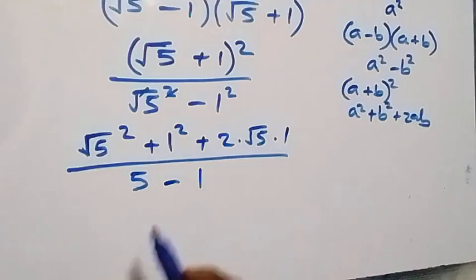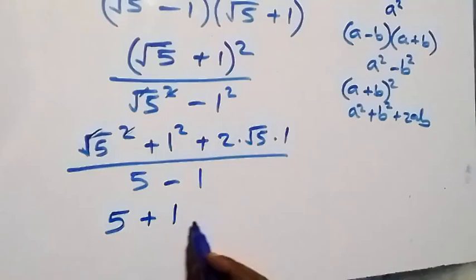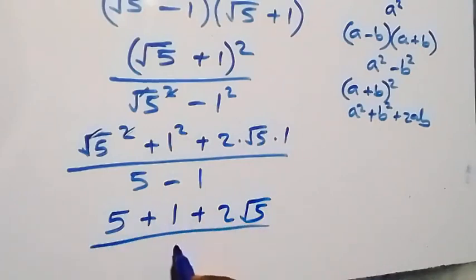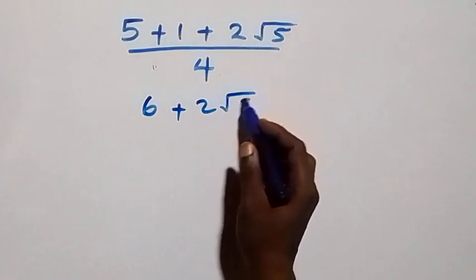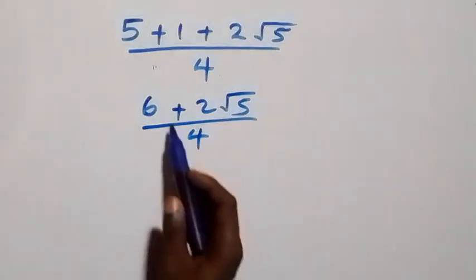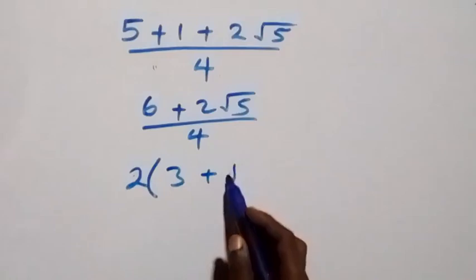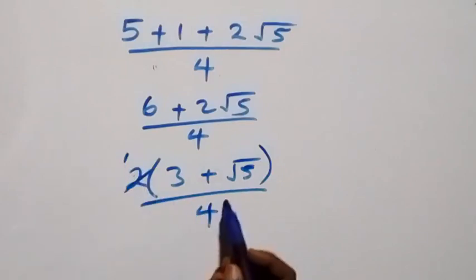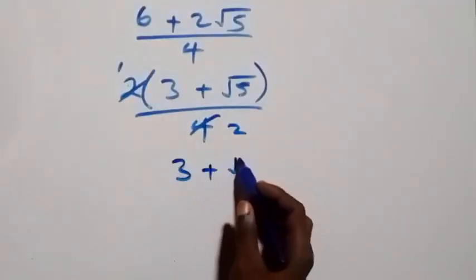So simplifying: the numerator gives 5 plus 1 plus 2 root 5, over 5 minus 1, which is 4. That is 6 plus 2 root 5 over 4. Two is common in the numerator, so we factor that out: 2 times (3 plus root 5) over 4. Two cancels with 4 to give 2, and this becomes (3 plus root 5) over 2. So the solution to the first method is (3 plus root 5) over 2. Now let's use the second method.